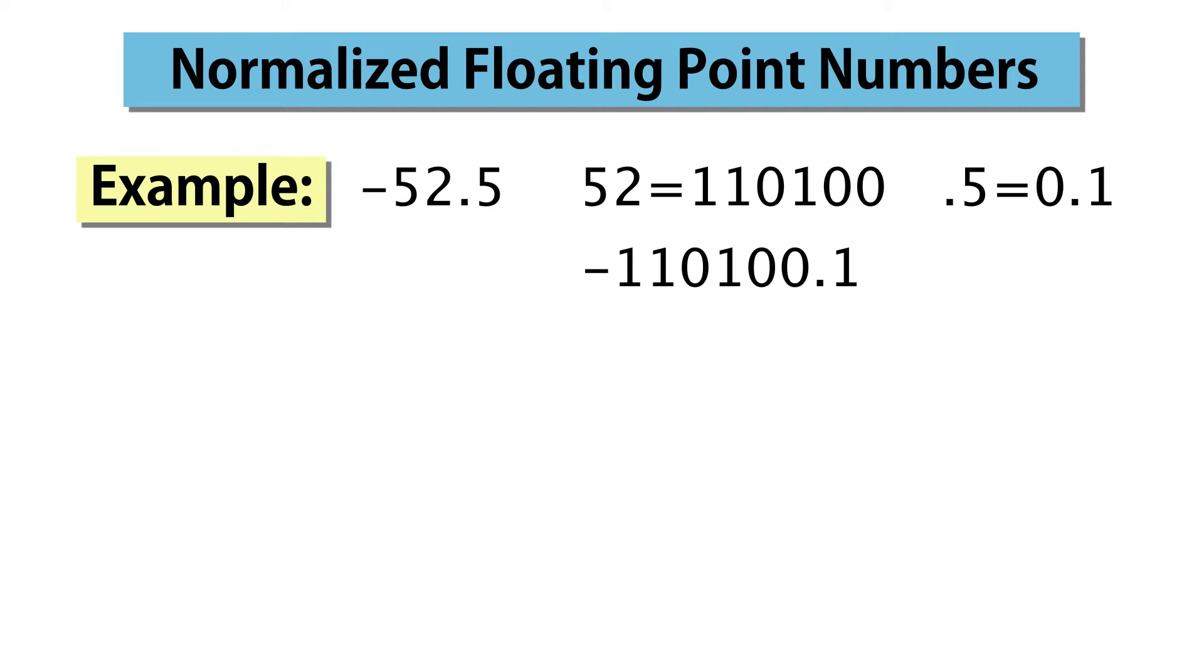You may recall that in scientific notation, we represent our number in a particular form. The sign is either plus or minus. The constant c has one significant digit to the left of the radix point. The base b is 10 for decimal numbers and 2 for binary. The exponent is a positive or negative integer.